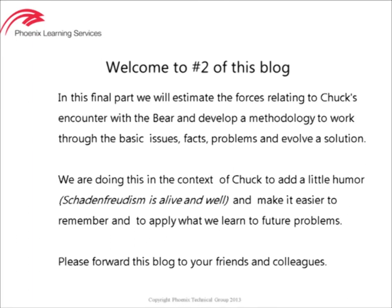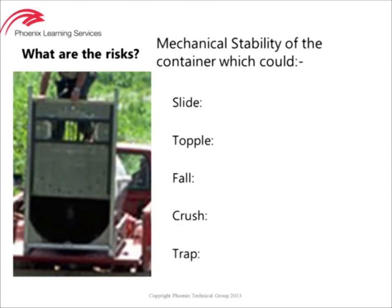Welcome back to part two of Chuck and the Bear, the final instalment where we see what happens to Chuck. The purpose of this two-part blog is to give insight and demonstrate how we can use standards, even wrong standards, to provide a method for assessing risks and hazards, identifying the orders of magnitude of forces, temperatures, stresses, and whatever variable we're concerned with — how we can quantify what is likely to happen in real life and develop simple strategies to avoid hazards. If you haven't viewed part one, I recommend you stop watching now and go watch that first.